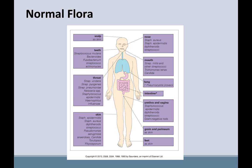The first important term to understand is normal flora. You probably remember this from your microbiology class. For humans, it's primarily bacteria and the yeast Candida. We are covered, as you can see in this diagram, head to toe, inside and outside, with all different types of organisms that are normally found in lots of different places.